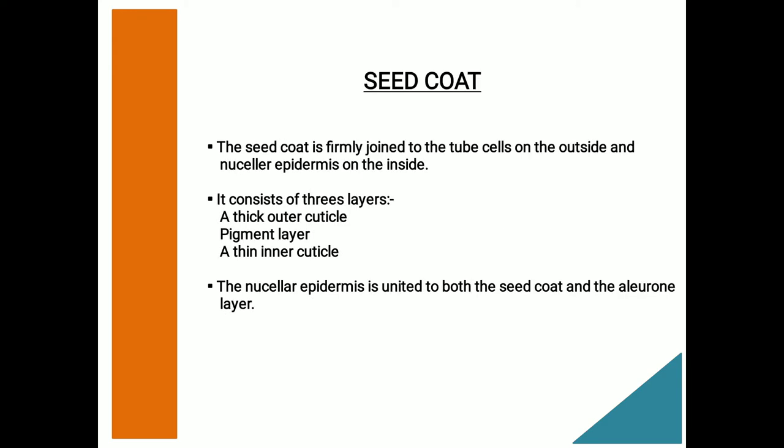Next is the seed coat. The seed coat is firmly joined to the tube cells on the outside and the nucellar epidermis on the inside. It consists of three layers: a thick outer cuticle, a pigment layer containing pigment, and a thin inner cuticle. Next to the seed coat layer, there is a nucellar epidermis, sometimes also called the hyaline layer, which unites both the seed coat and the aleurone layer.